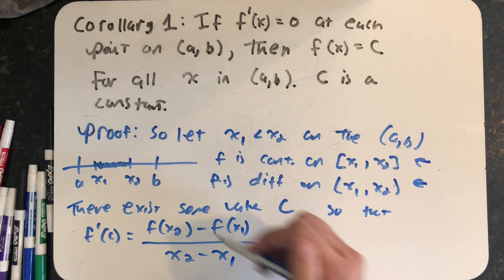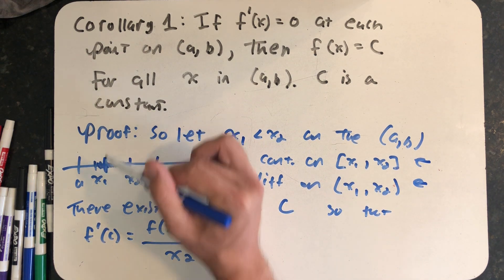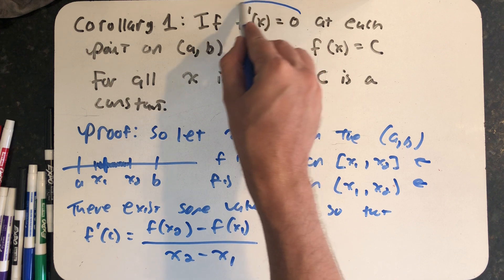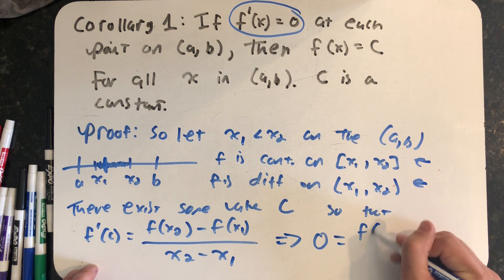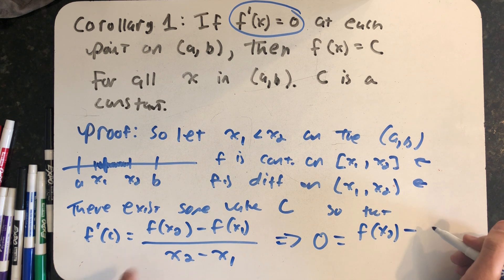But even better than that, c has to be between x1 and x2. So I know f prime of c is actually zero. So zero is actually equal to this average rate of change.